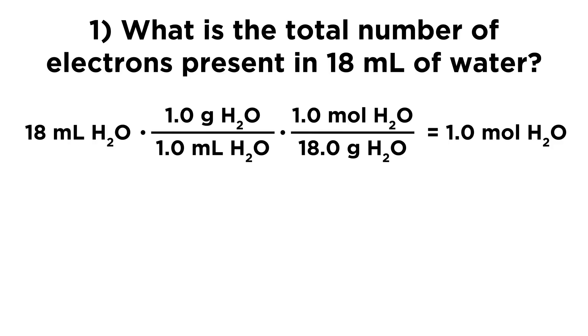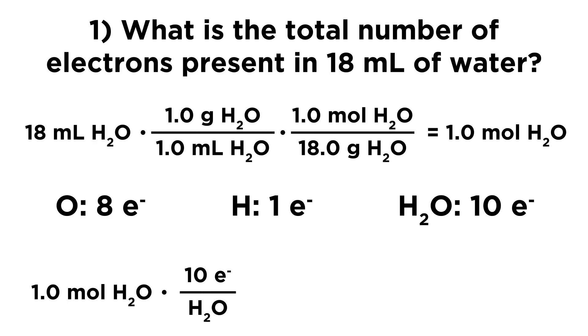So we know we have one mole of water, but how does that correspond with numbers of electrons? Well, we know that every oxygen atom has eight electrons if it's a neutral atom because it has an atomic number of eight, meaning there are eight protons in the nucleus. And so to be neutral, it must have eight electrons as well. And hydrogen atoms have one electron, and there are two of them. And so we have a total of 10 electrons per water molecule.